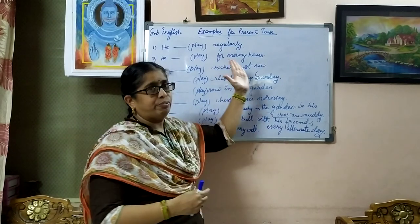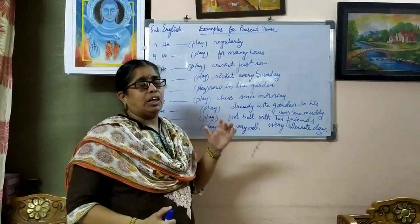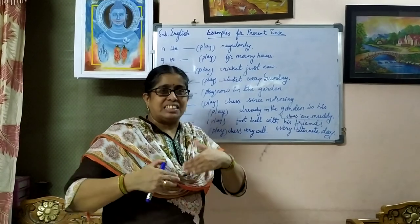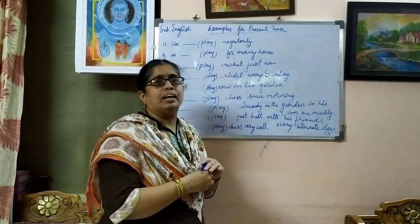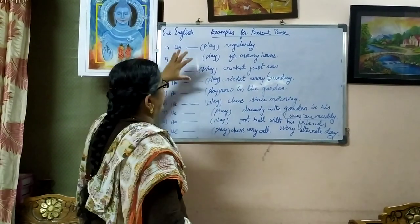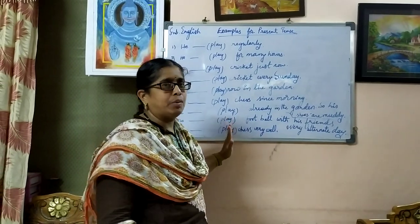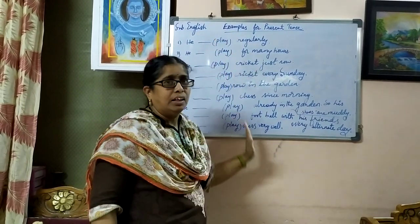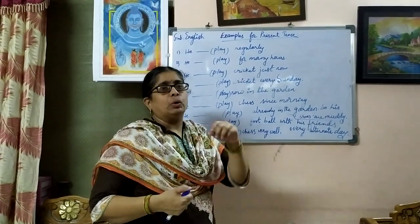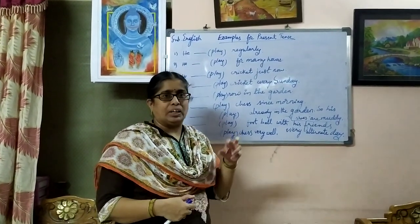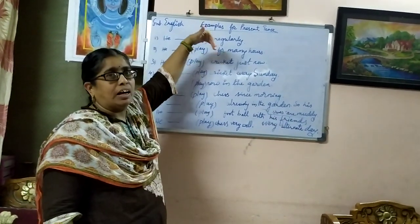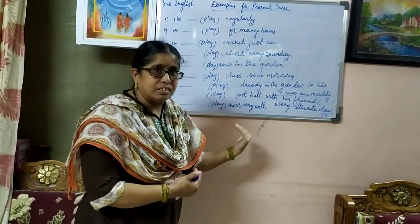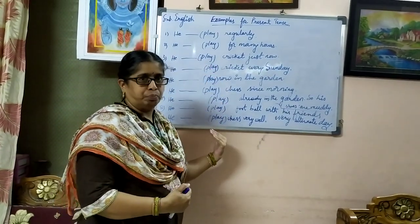Now here I have written a few examples for present tense to make you more aware and to make the present tense more understandable. I have taken only one verb — play — for all nine examples. By using the same verb in all the examples, I want you to understand more clearly how the same verb changes according to the situation and usage. I will give and explain the answers one after the other.